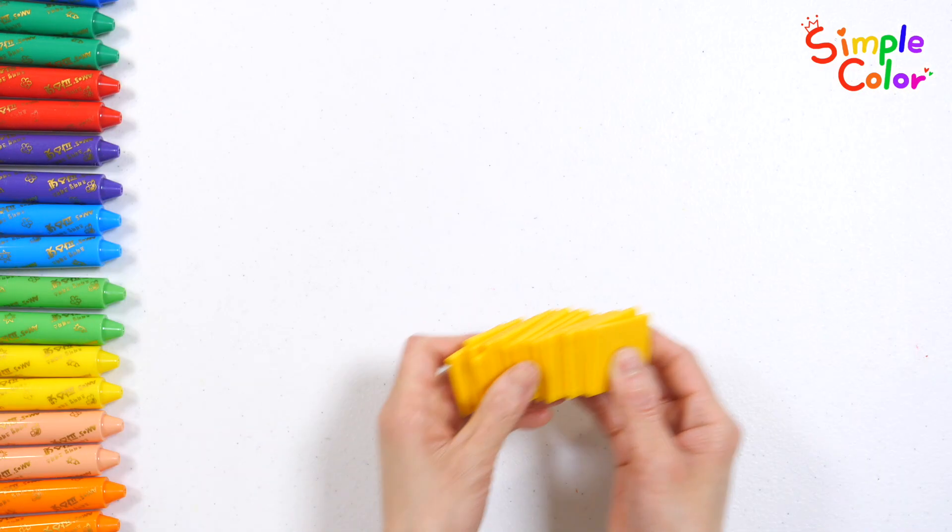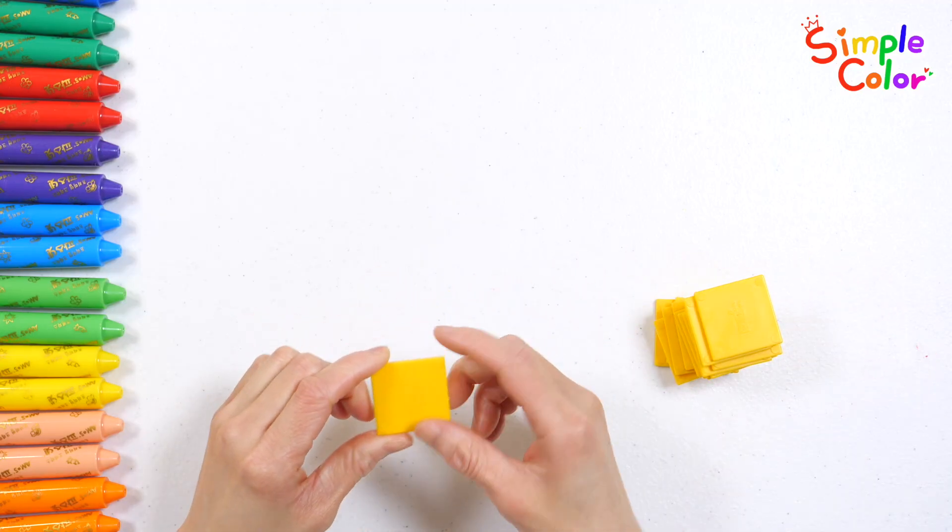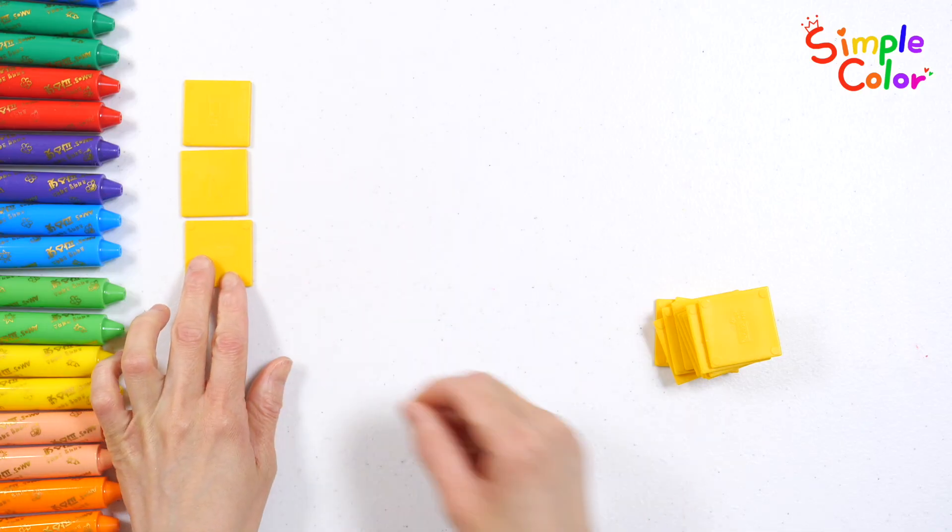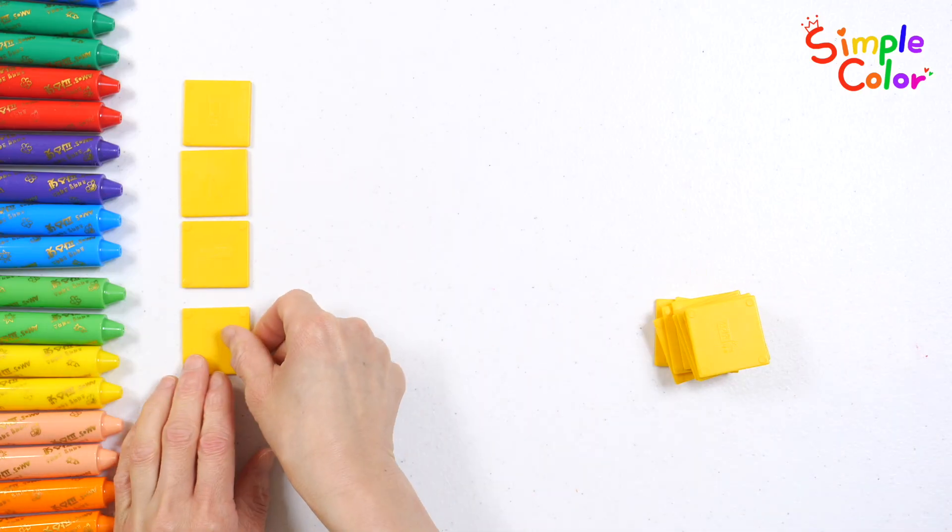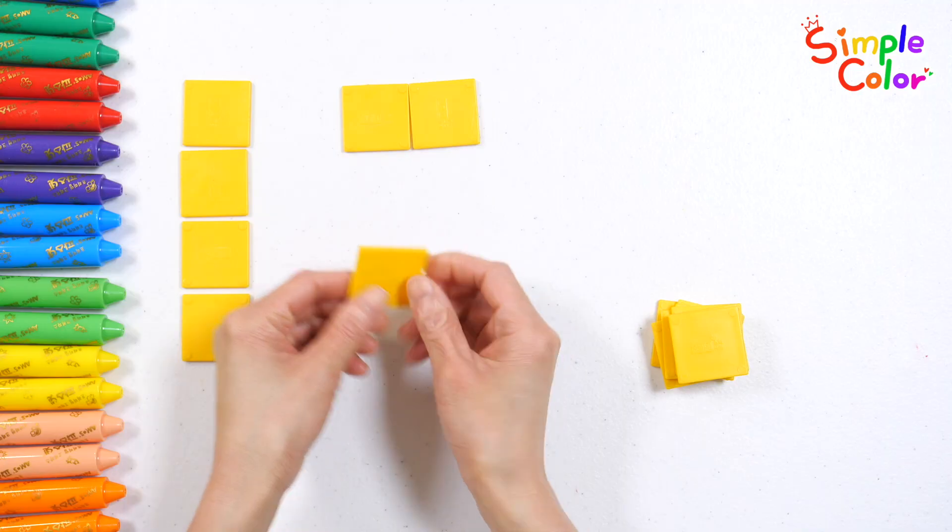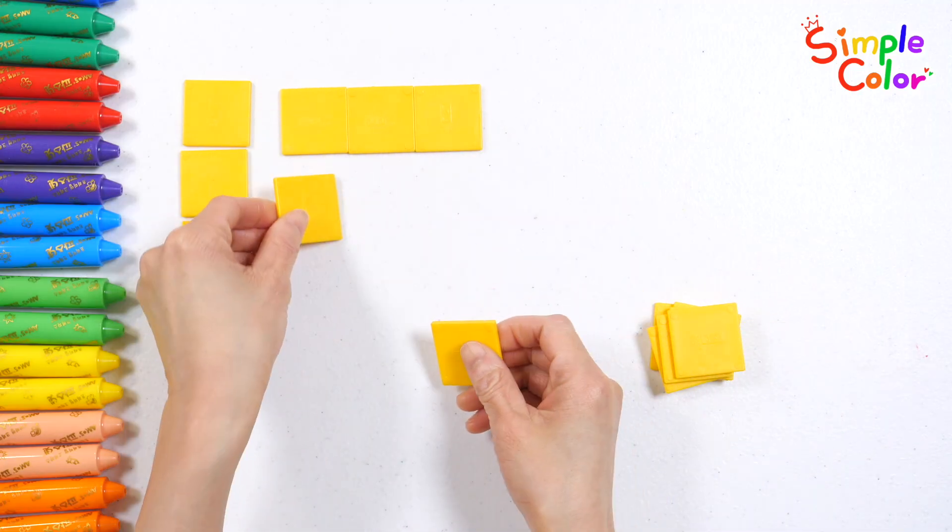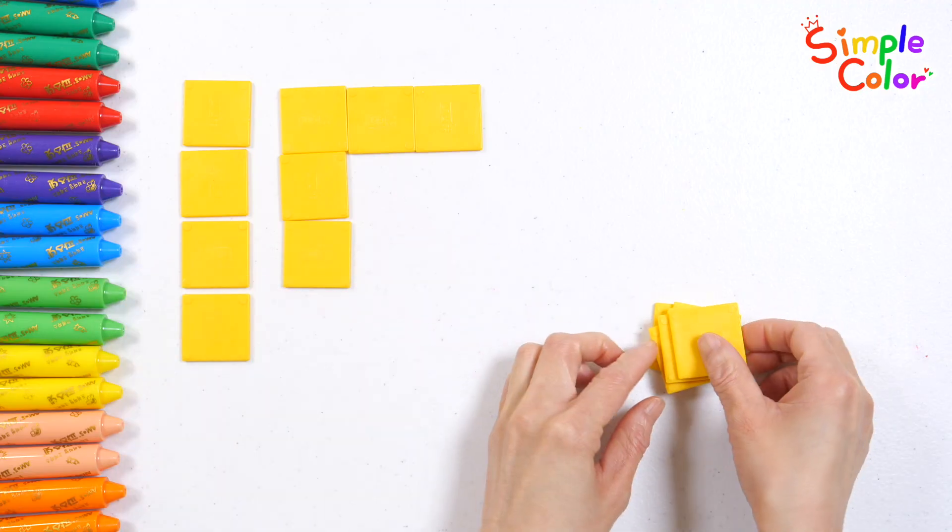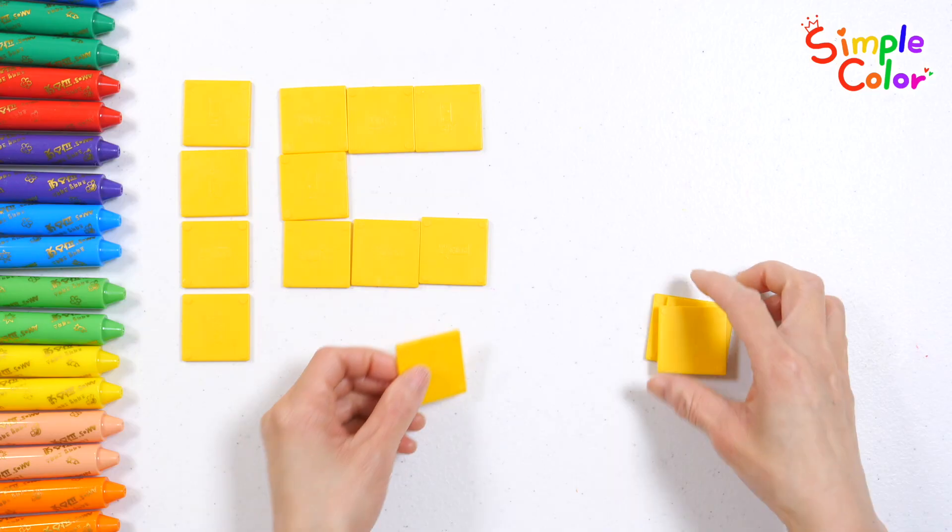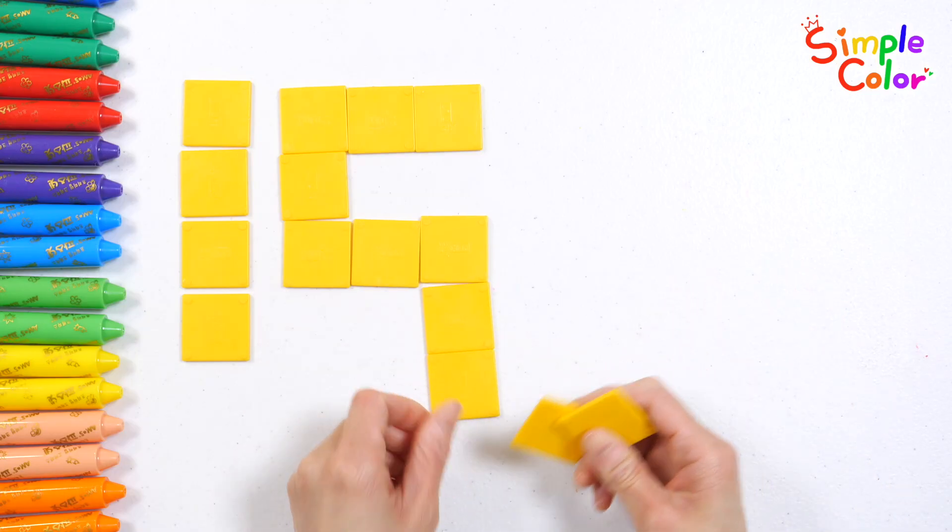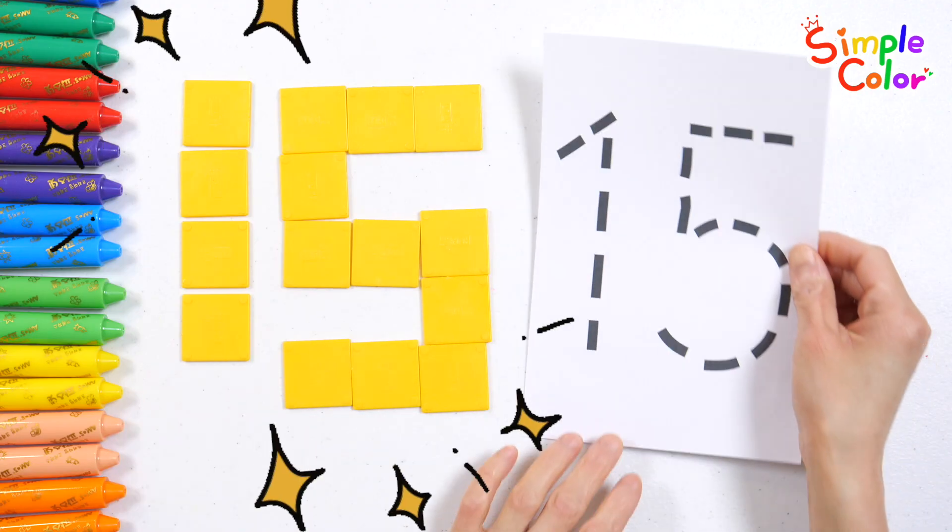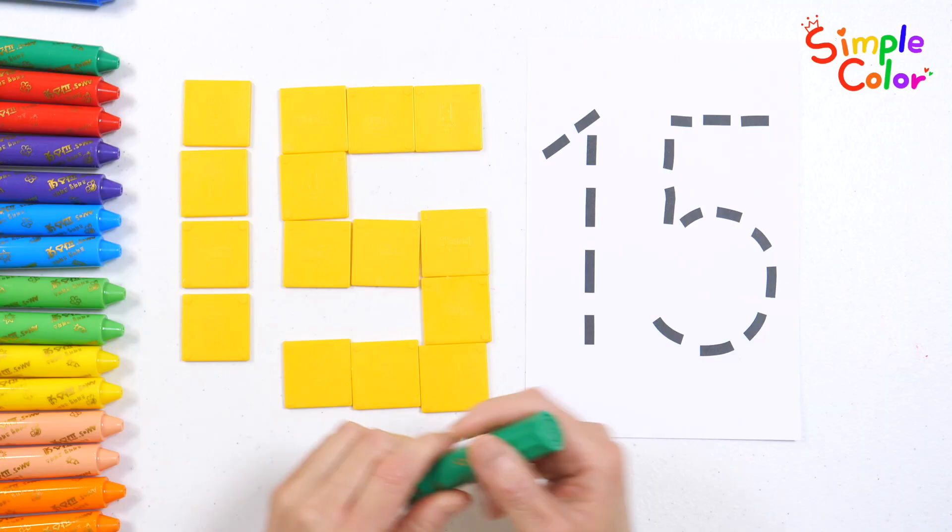Let's make the number 15 shape with yellow chips and count them one by one. 1 2 3 4 5 6 7 8 9 10 11 12 13 14 15 We made the number 15 shape with 15 chips.